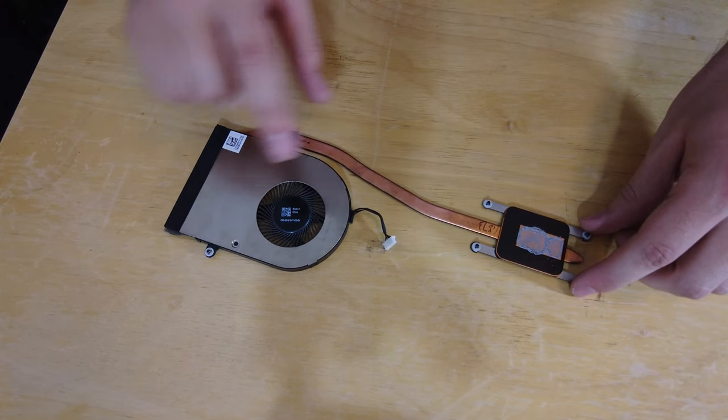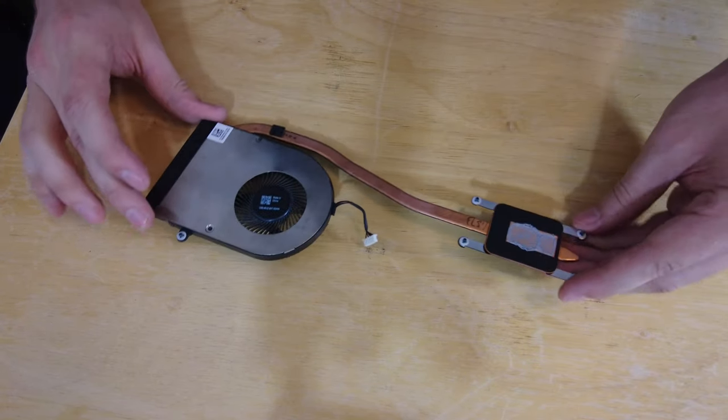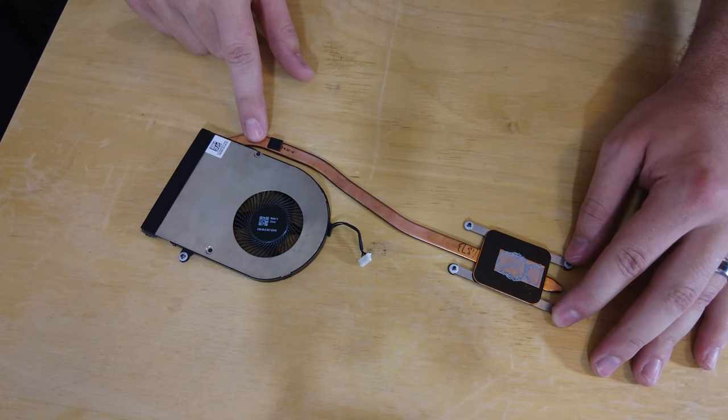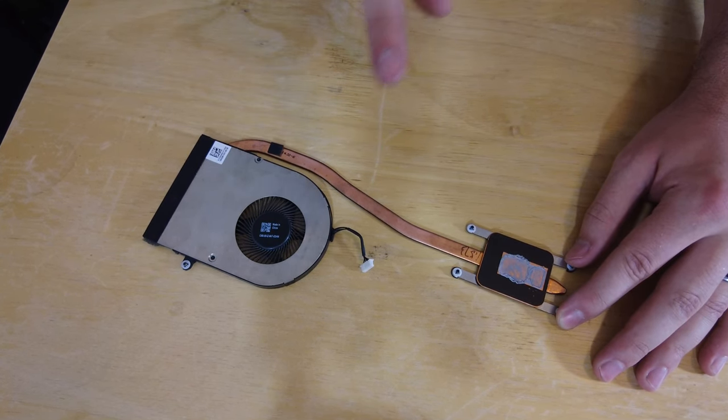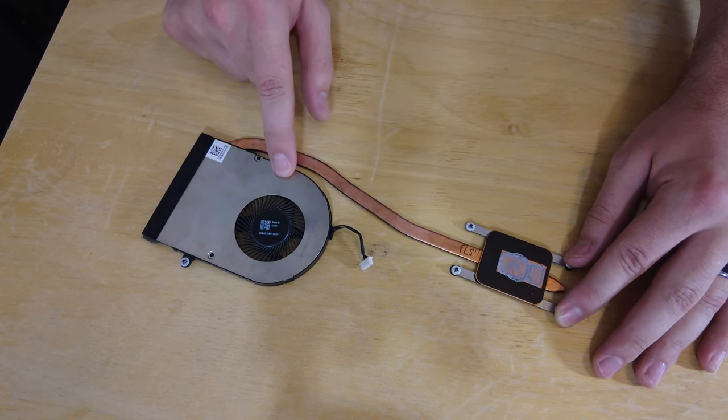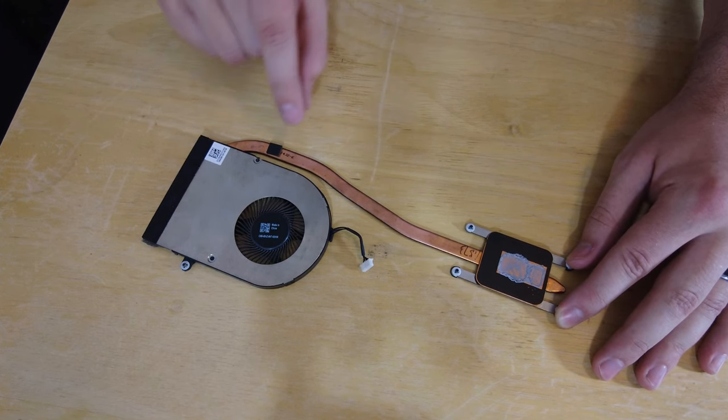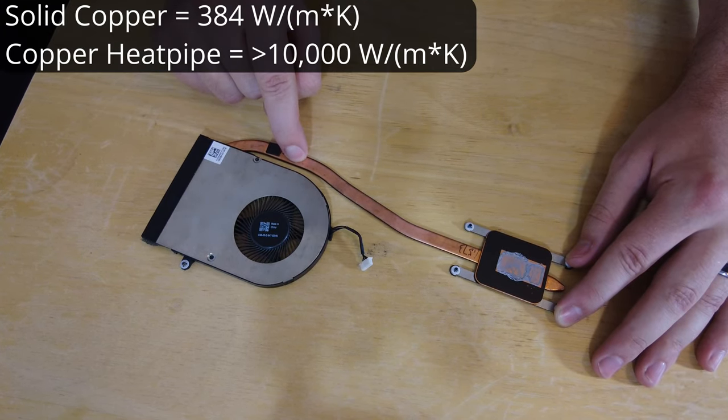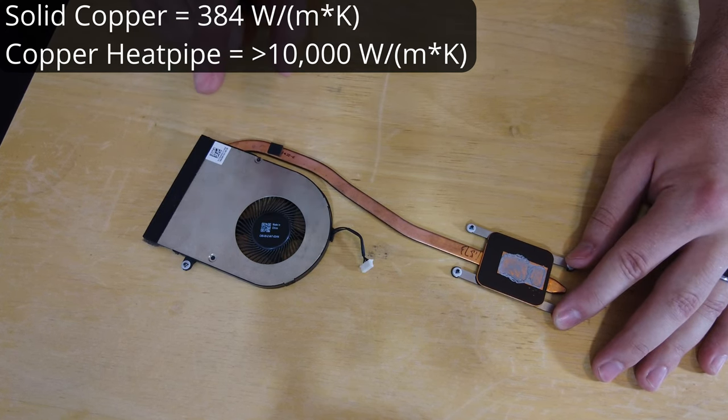It may be hard to believe, but inside here, inside this tiny, thin, razor-thin piece of copper, there is actually liquid. And that's why it's called a heat pipe. With the liquid and all the various other things, instead of a thermal conductivity of 384 watts per meter Kelvin, this has a thermal conductivity of over 10,000 watts per meter Kelvin. And I'll demonstrate that in a second, because it is wild.